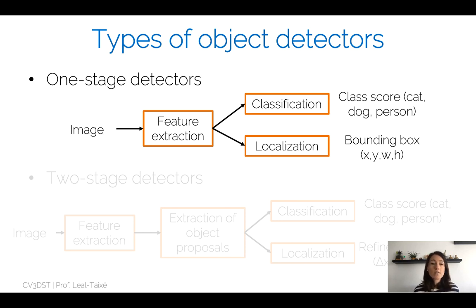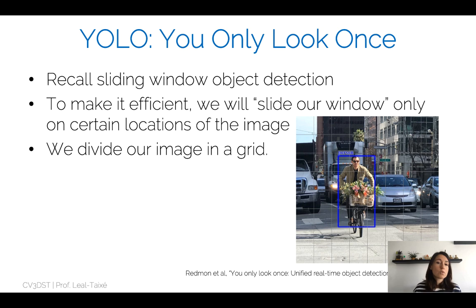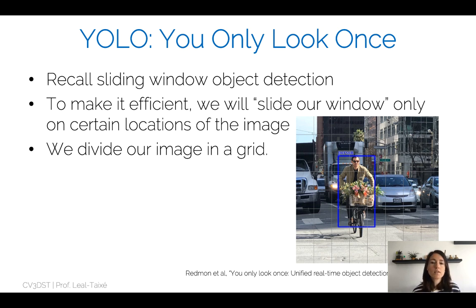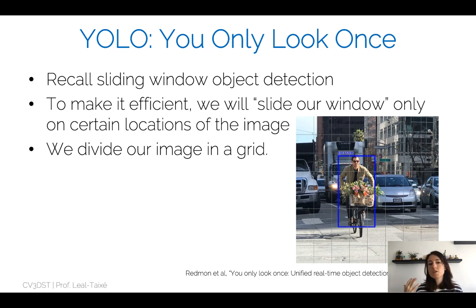This approach has advantages and disadvantages, but the main advantage is that one-stage detectors are incredibly fast. Let's look at perhaps the most famous one-stage detector: YOLO, 'You Only Look Once.' The motivation behind YOLO reminds us of the sliding window approach — one of the first approaches to object detection — where a template is slid across the image to find regions depicting similar objects.